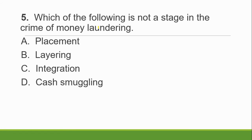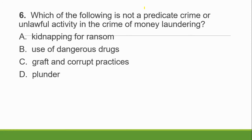Question 4: It is a crime where the proceeds of unlawful activity are transacted, thereby making them appear to have originated from a legitimate source. Is it A. theft, B. money laundering, C. qualified theft, or D. robbery extortion? The answer is of course money laundering. Question 5: Which of the following is NOT a stage of the crime of money laundering? A. Placement, B. Layering, C. Integration, or D. Cash smuggling. The answer is cash smuggling — PLI are the only stages of money laundering.